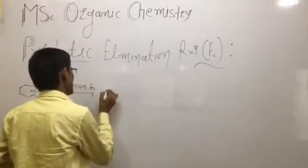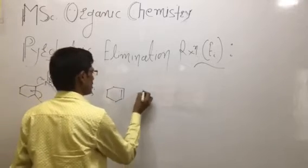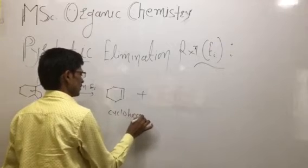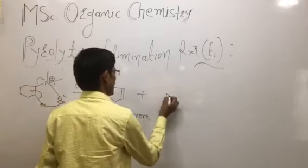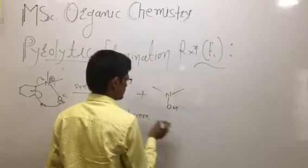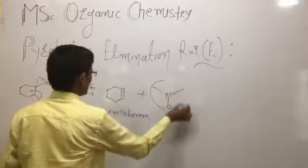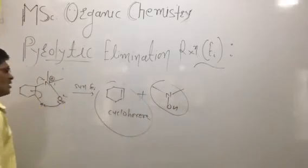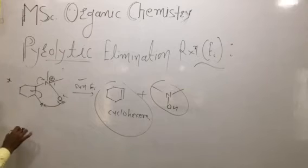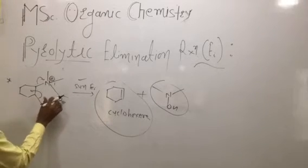The bond shifts and syn elimination takes place, forming the product. This is an intramolecular process. The product formed is cyclohexene. The side products include a nitrogen-containing two-molecule group, a hydroxy group, and water. So cyclohexene is formed via syn elimination from the starting cyclic reactant molecule.